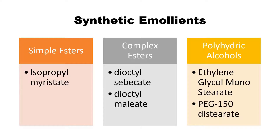Next we move on to synthetic emollients. As the term describes, they are synthesized in the lab. Synthetic emollients are basically esters produced by the combination of alcohols and acids. They are classified into three categories depending on complexity. First are simple esters — a simple combination of acid and alcohol — resulting in the formation of isopropyl myristate. Second are complex esters, where the acidic and alcoholic chains are enlarged, giving emollients like di-octyl sebacate or di-octyl maleate.